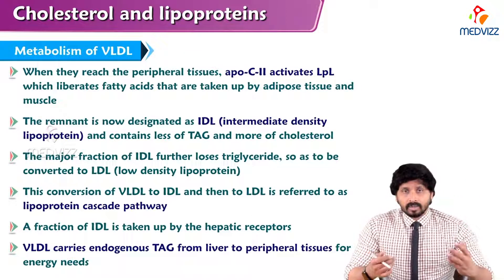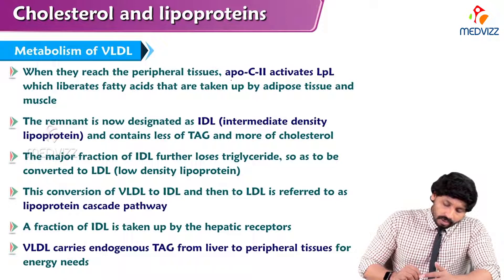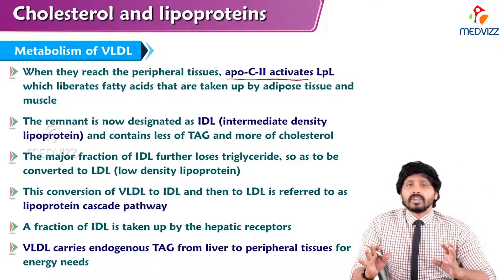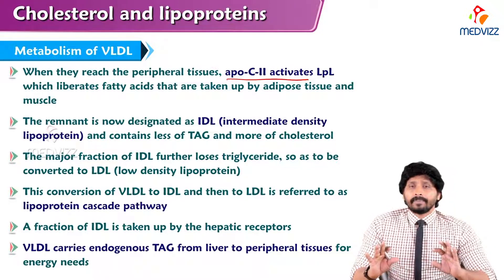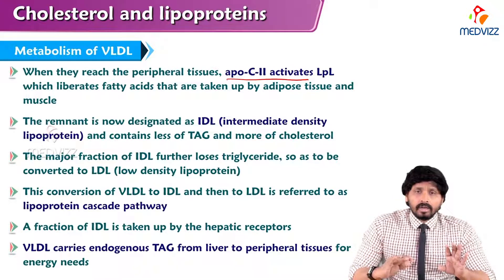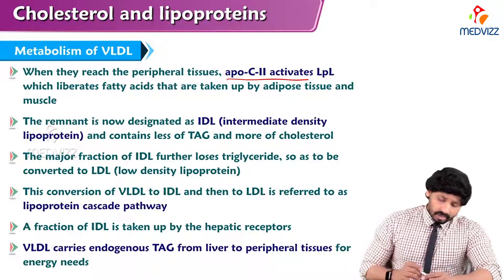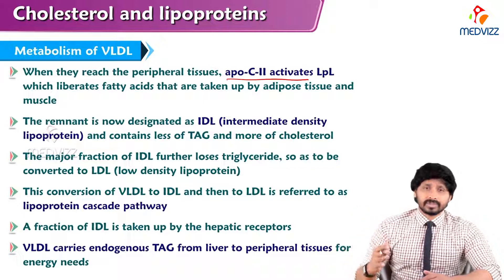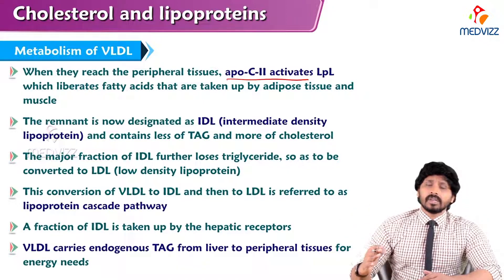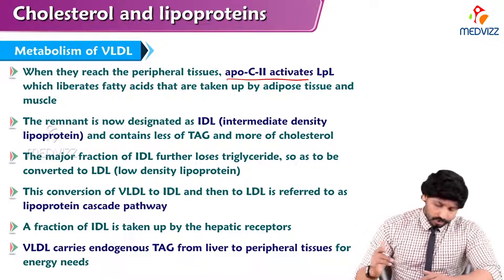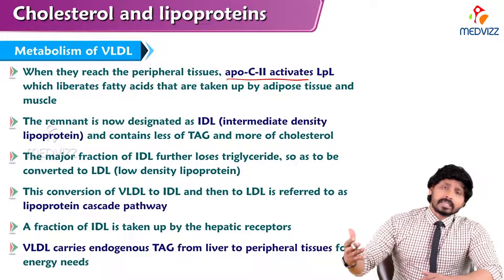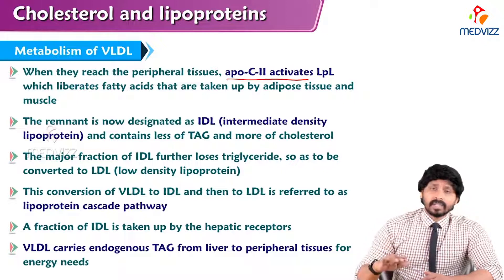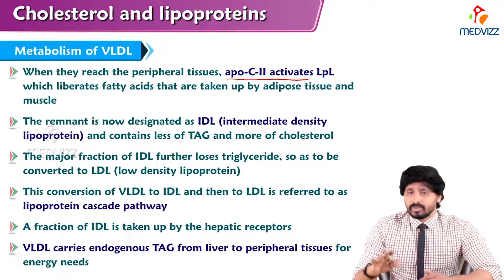What is the metabolic aspect? When VLDL reaches the peripheral tissue, ApoC2 — as we said — when it is entering into circulation, ApoC2 will be given from the HDL. ApoC2 activates lipoprotein lipase, which is present in the endothelial lining of extrahepatic tissues such as skeletal muscles, cardiac muscles, and adipose tissue. The content of triglyceride inside the VLDL will be broken down and dumped into skeletal muscles, adipose tissue, and cardiac muscles.